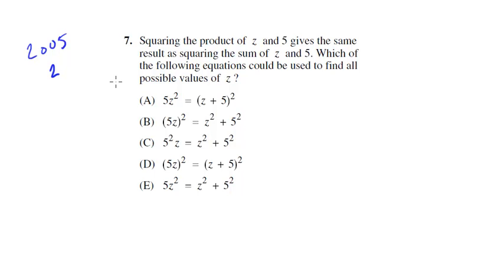In these problems, we're going to take words and translate them into an equation, and we may or may not solve that equation based on what the question is asking. Squaring the product of z and 5 gives the same result as squaring the sum of z and 5. Which of the following equations could be used to find all possible values of z? Instead of trying to match this, let's write this out our own way and then match it.